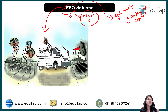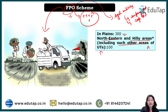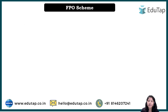The government has set minimum membership numbers for FPOs. In plain areas, an FPO group should have at least 300 members. In northeastern and hilly areas, because there are fewer people living there, 300 would be a huge number — so in those areas and certain UTs with population limitations, 100 members will be the optimum number considered.